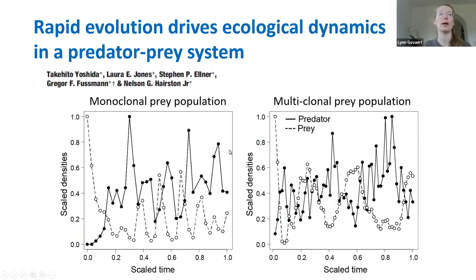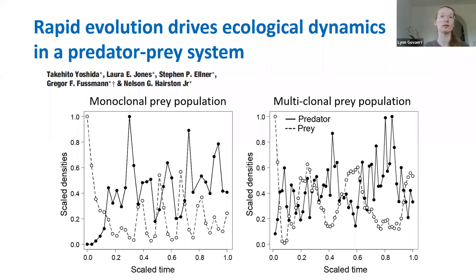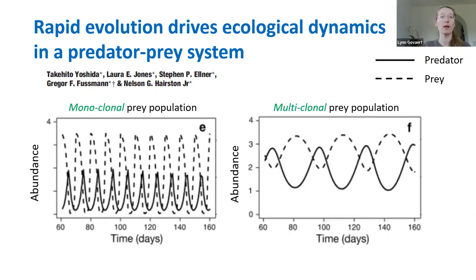When the authors compared predator-prey dynamics using the monoclonal versus multi-clonal prey population, they discovered that the multi-clonal population produced anti-oscillating predator-prey dynamics, compared to the classical one-fourth lag phase dynamics. They also corroborated this finding with a theoretical Lotka-Volterra model, which confirmed the anti-oscillating dynamics with a multi-clonal versus monoclonal population.